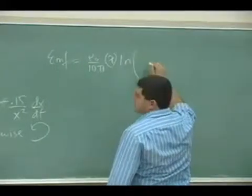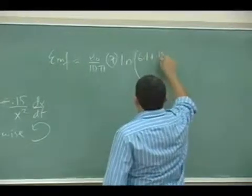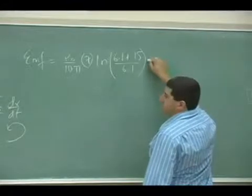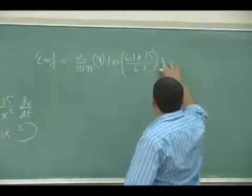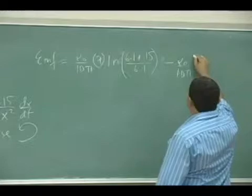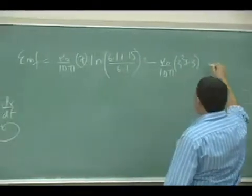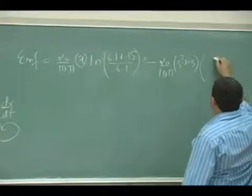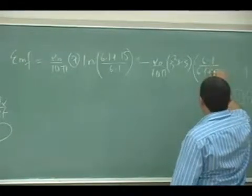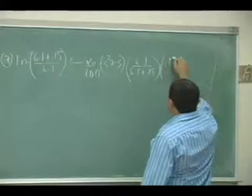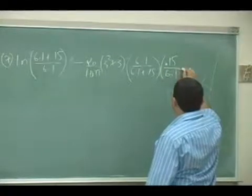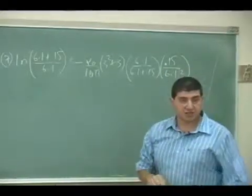ln of 6.1 plus 0.15 divided by 6.1 plus, no, I should say, no, minus, right? Mu is 0 over 10 pi, so 3 squared plus 3 plus x is 6.1 over 6.1 plus 0.15 times 0.15 over x squared, so that's 6.1 squared, times dx dt, which is the derivative, which is 2.